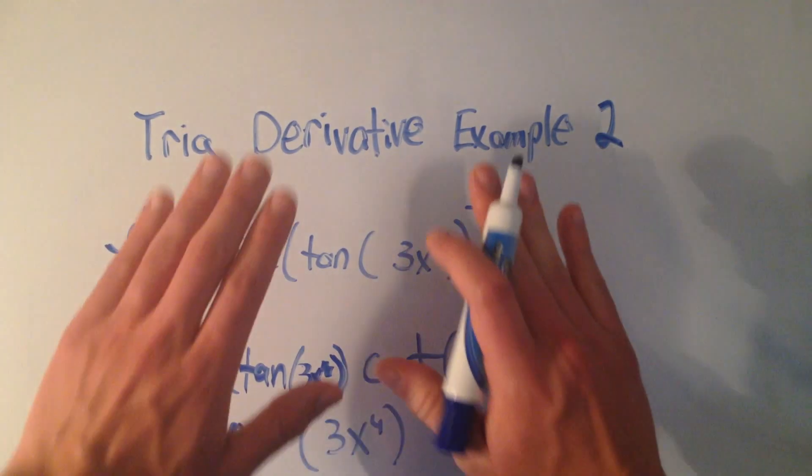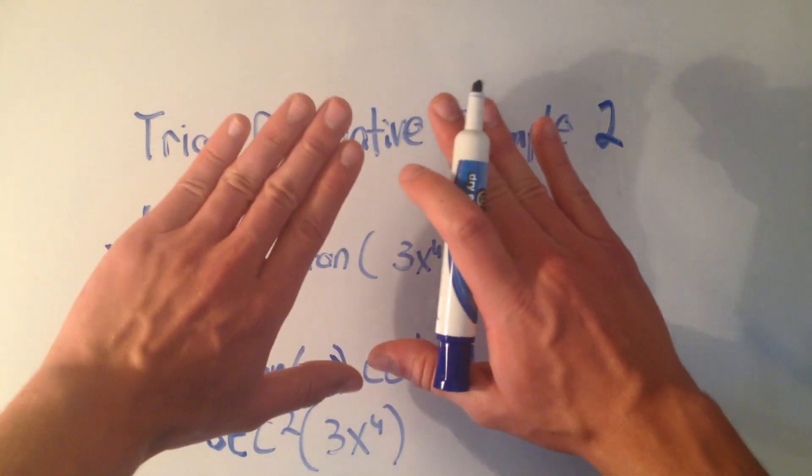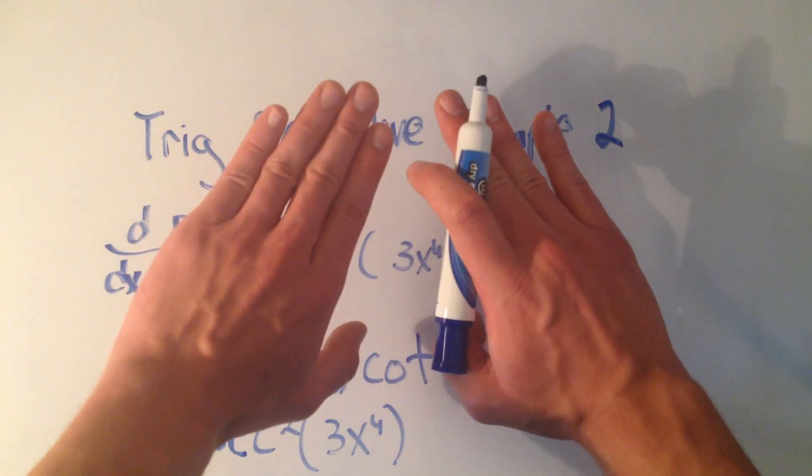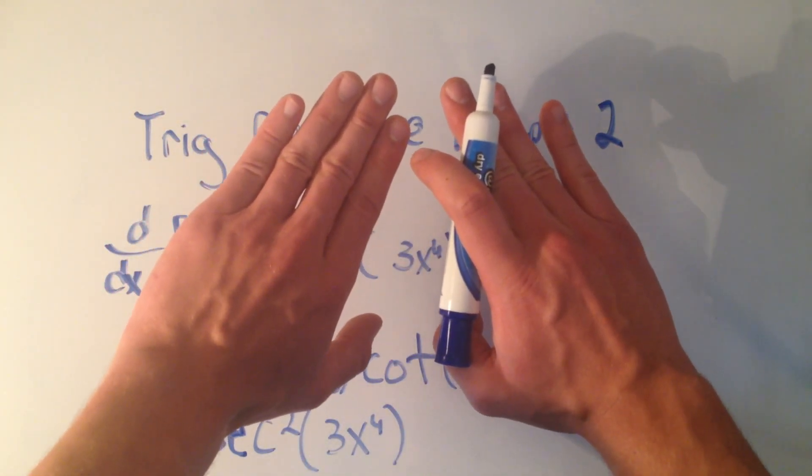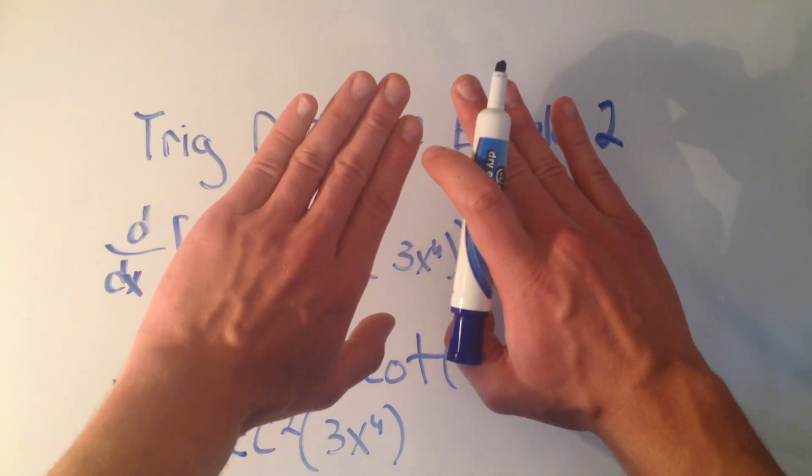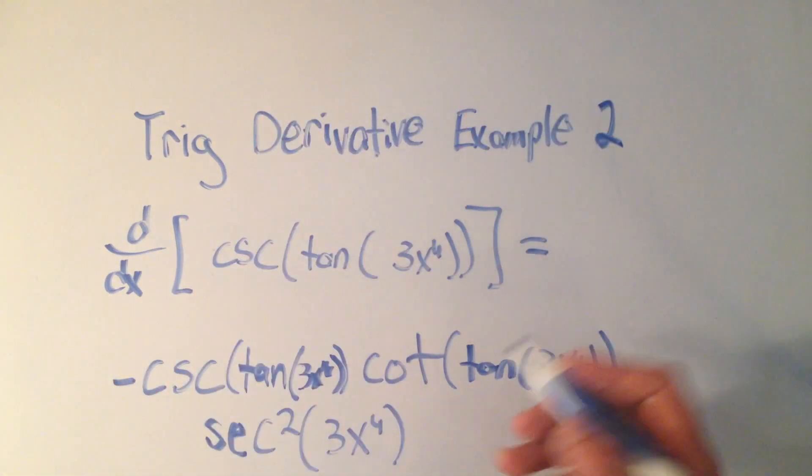And then now that I've done the biggest outside piece, the next outside piece, I need to do the last inside piece. The derivative of 3x to the fourth is 12x to the third.